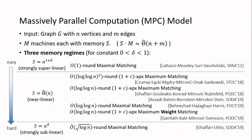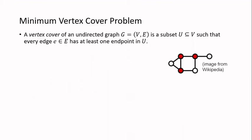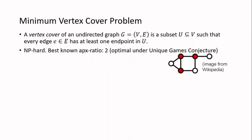In this paper, we work in the near-linear regime of MPC but look at a different problem: the minimum vertex cover problem. A vertex cover of an undirected graph is a subset U of vertices such that every edge has at least one endpoint in U. This problem is NP-hard and the best-known approximation ratio is 2, which is optimal under the unique games conjecture. The vertex cover problem is closely related to matching, and their LP relaxations are dual to each other, so some matching algorithms also work for approximate minimum vertex cover.